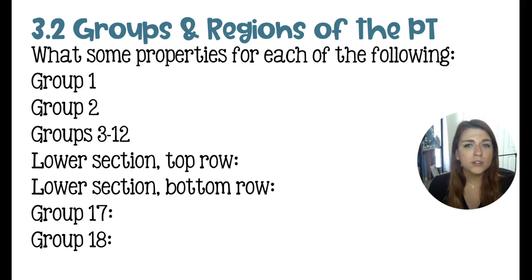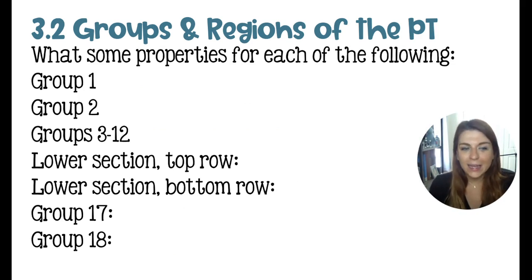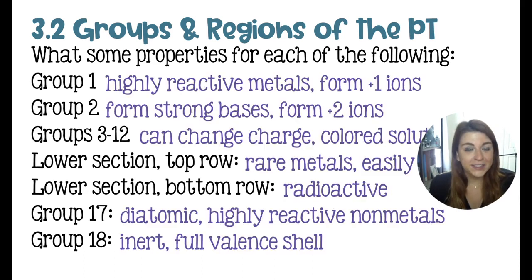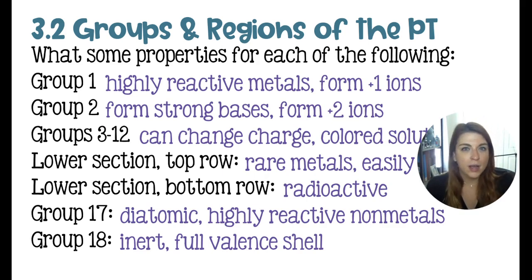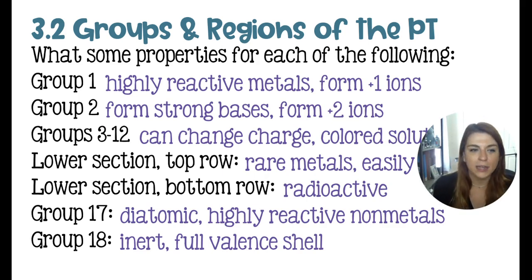The next question asks what are some properties for each of those groups. Take a minute to jot down some properties, and include the staircase metalloids. The alkali metals in group 1 are highly reactive metals — they form plus-one ions and strong bases. Group 2 alkaline earth metals also form strong bases, they form plus-two ions, and they are decently reactive.